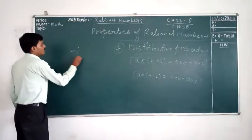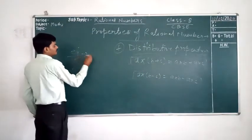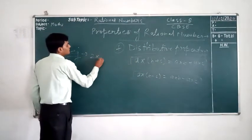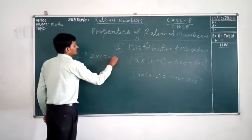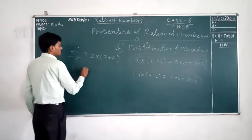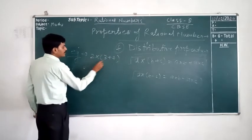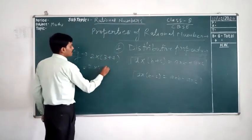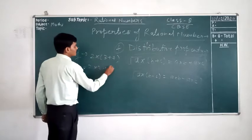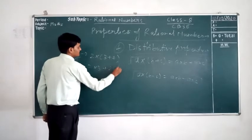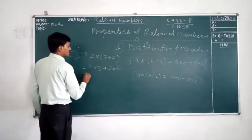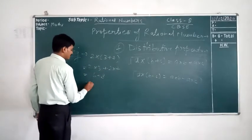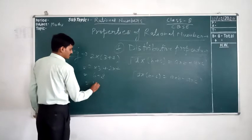For example, 2 × (3 + 4). Using distributive property: 2 × 3 + 2 × 4, which gives 6 + 8 = 14.